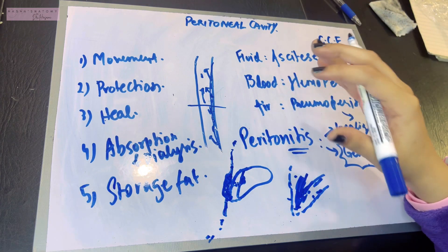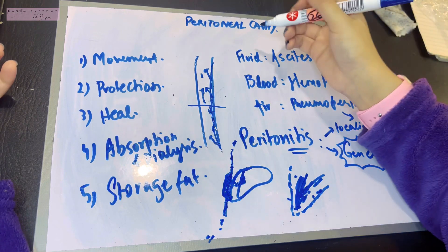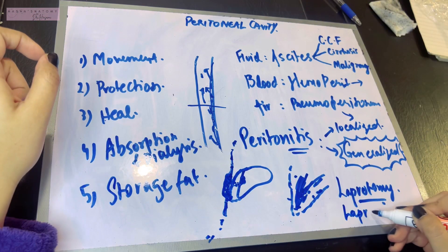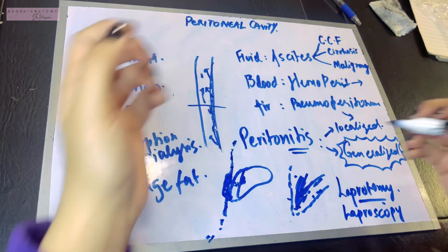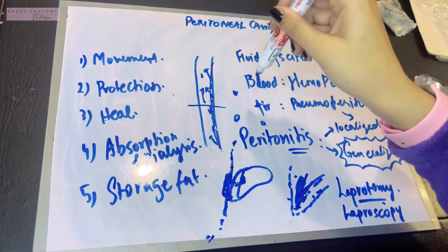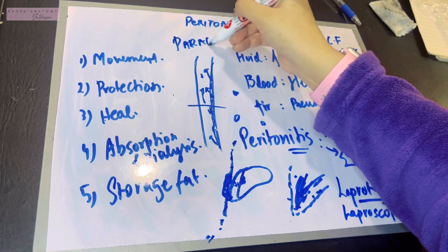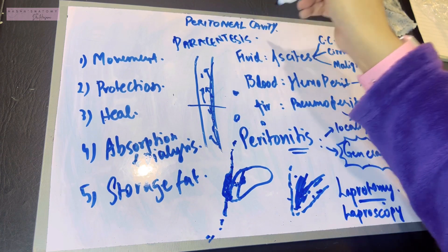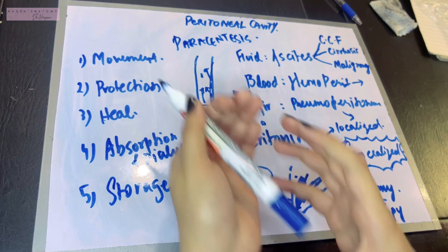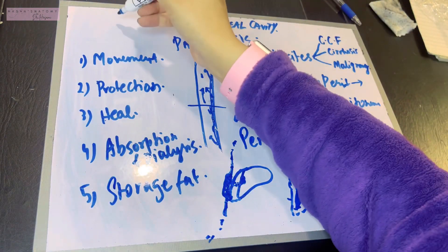When surgery is required for the abdomen, the procedure is known as a laparotomy — the opening up of the abdomen to carry out surgery. If we just want to view what's happening inside the abdomen, we carry out a laparoscopy, in which a laparoscope is inserted through small holes in the skin with a camera to visualize the inside. Another clinical procedure is paracentesis — aspiration of fluid from the peritoneal cavity to drain any ascites, blood, or other fluid.